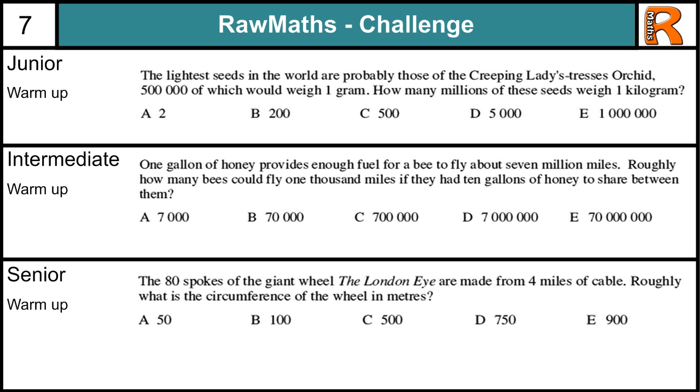Okay, junior warm-up. So we have got these seeds where 500,000 seeds equals 1 gram. So how many millions of seeds weigh 1 kilogram? Well, for 1 kilogram that is 1,000 grams. So we have to times this 500,000 by 1,000. So we get 500,000,000. So how many millions? Well, 500,000,000 which is C.